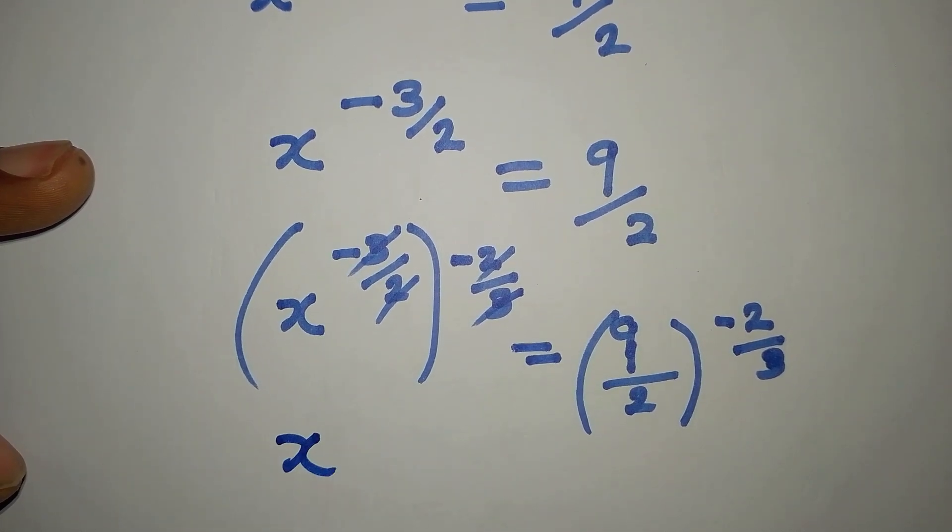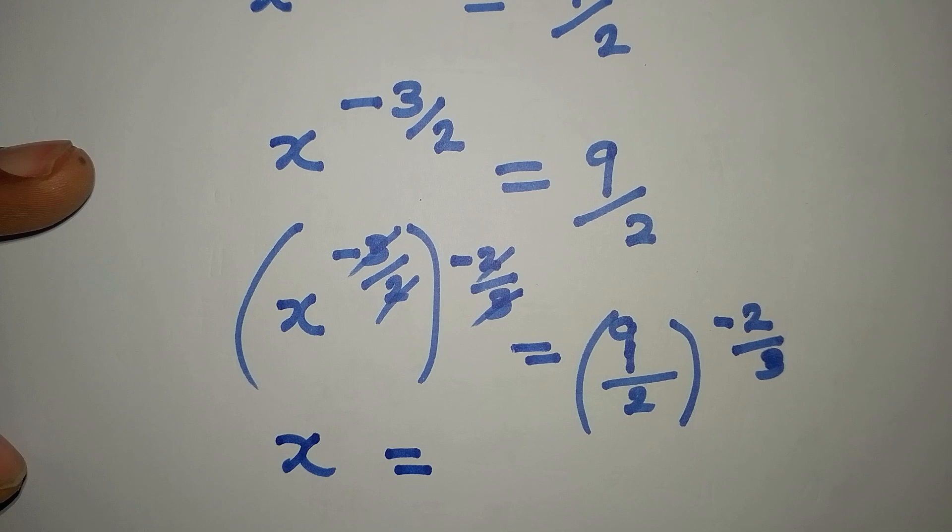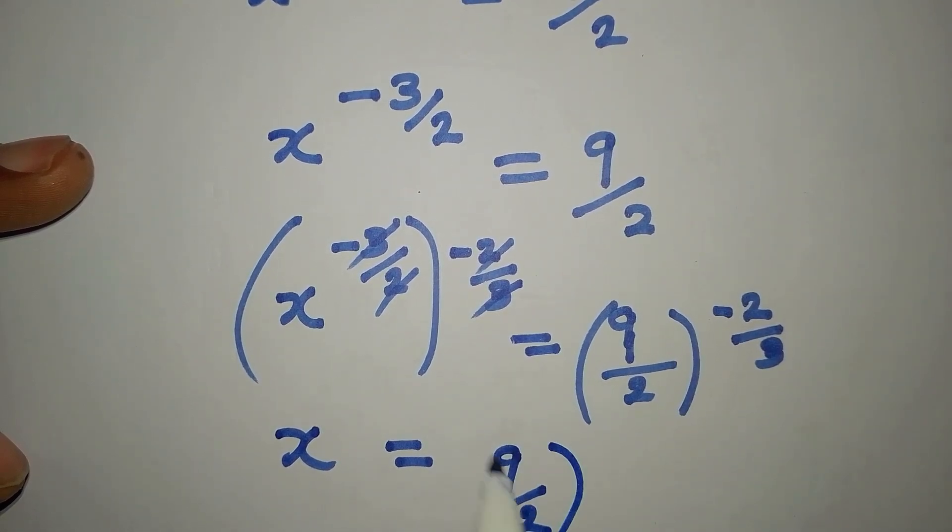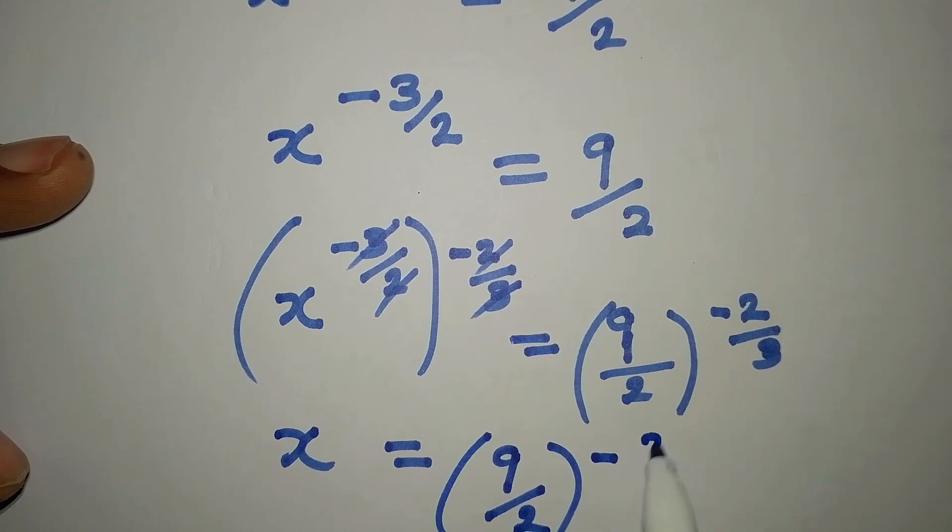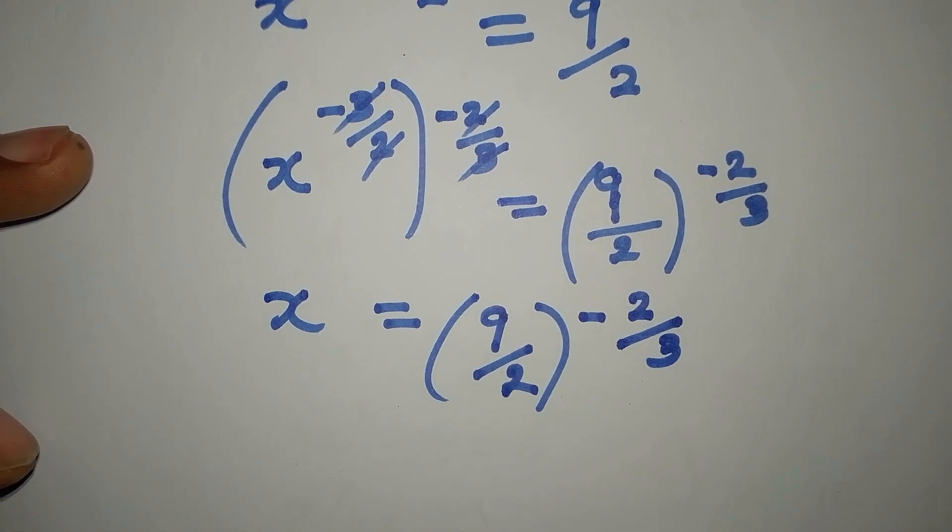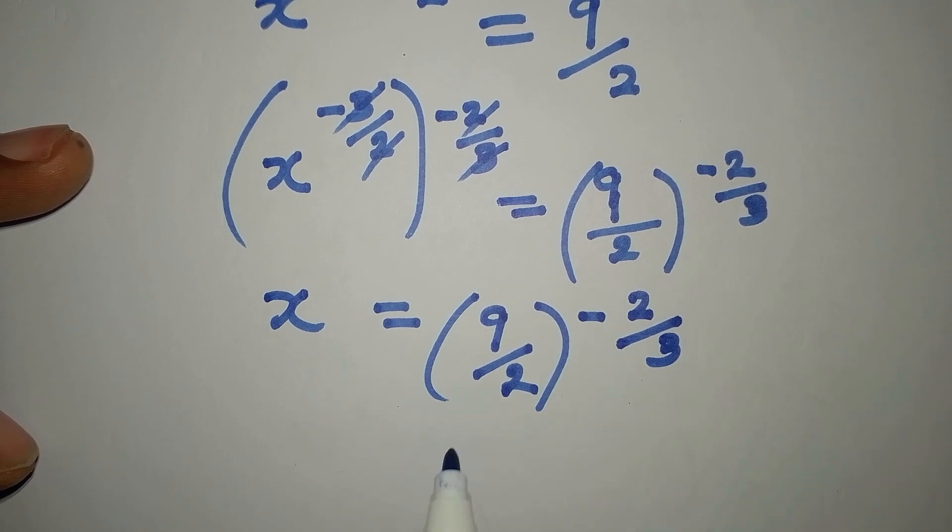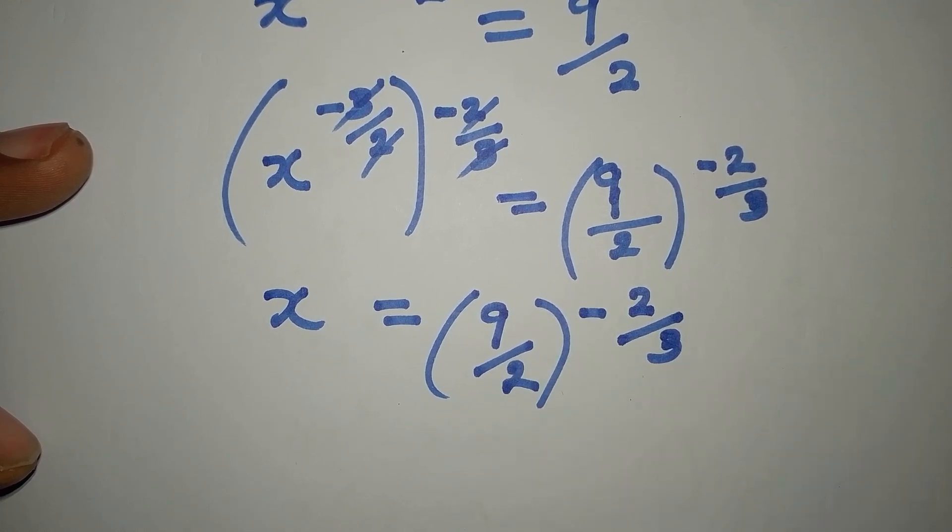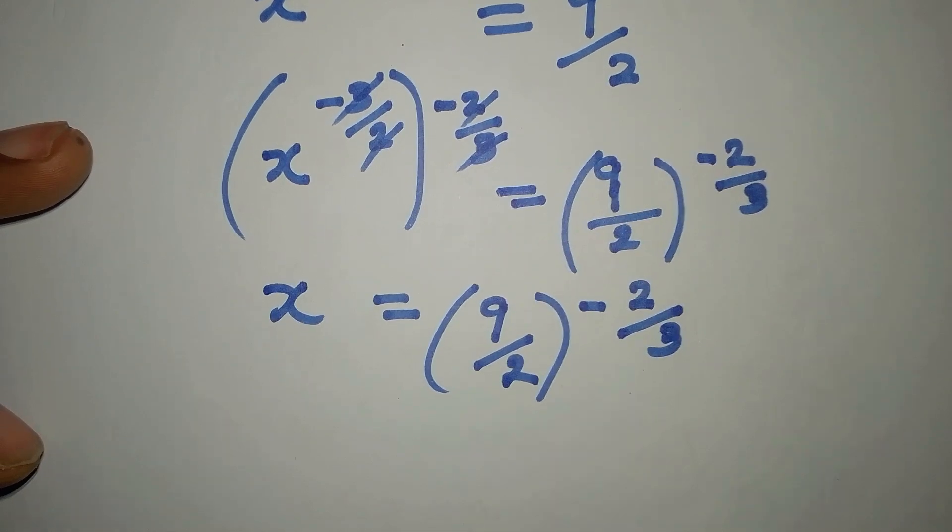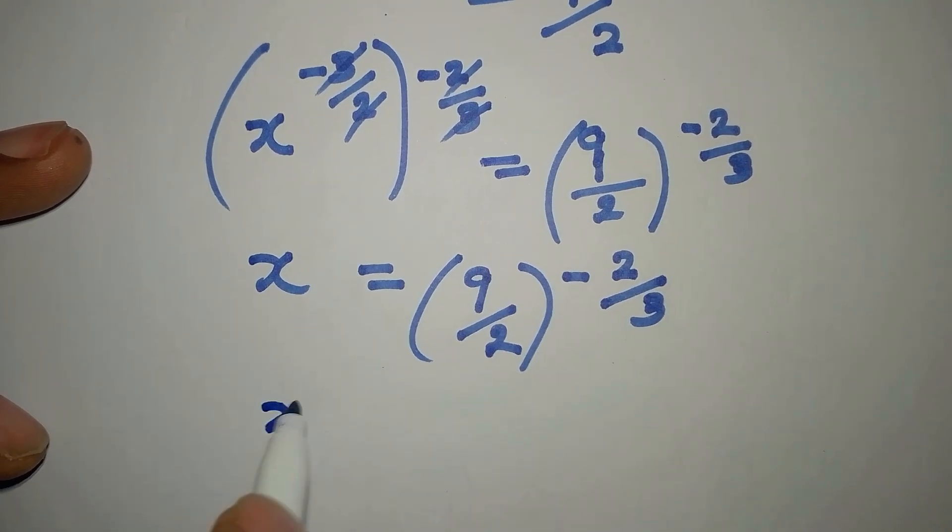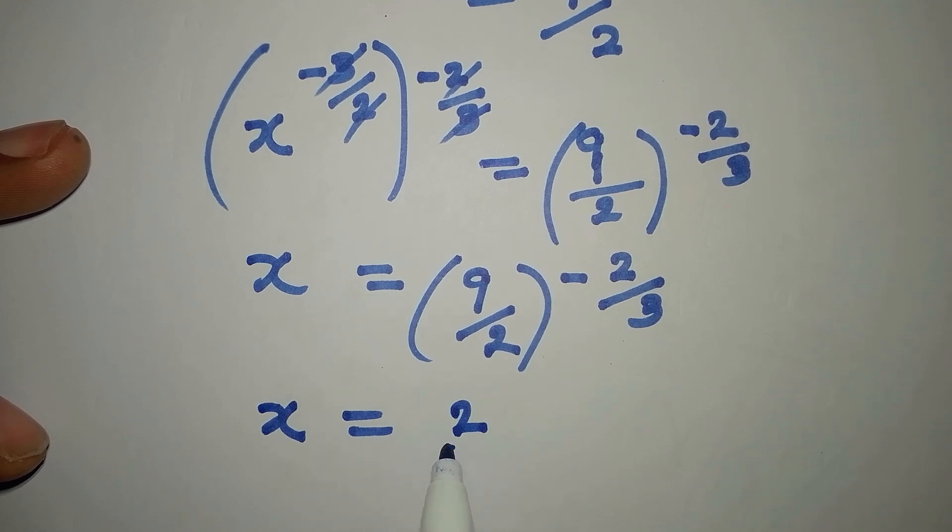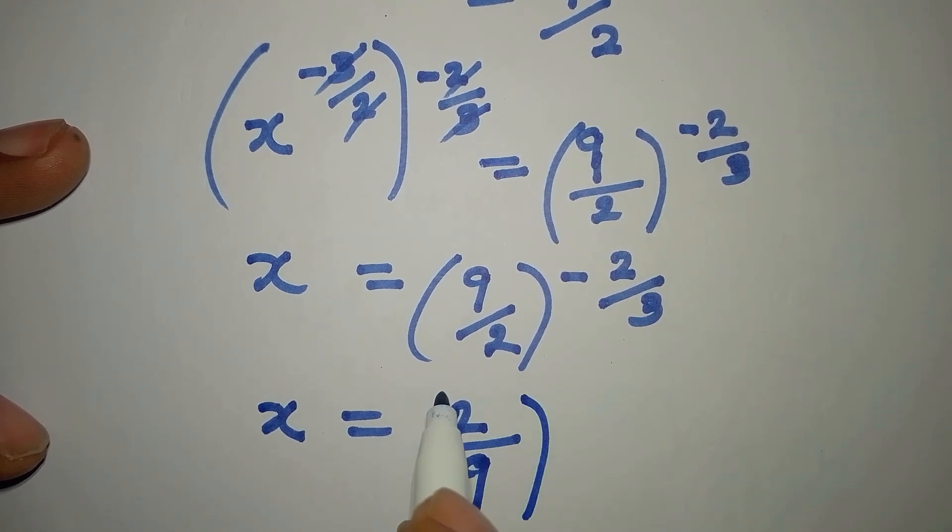over 2 to the power of -2/3. Now because of this negative, we can decide to turn this upside down. So if we do that, our x will now be (2/9)^(2/3).